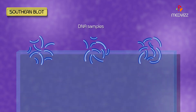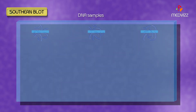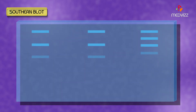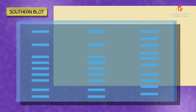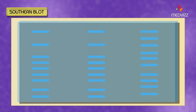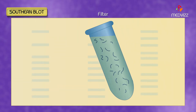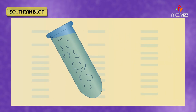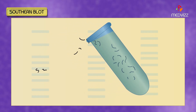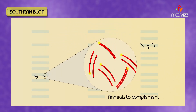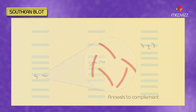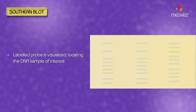DNA samples are separated via electrophoresis on a gel. The separated DNA is transferred to a filter. The DNA is then exposed to a labeled DNA probe that anneals to its complement. The labeled probe is then visualized, locating the DNA sample of interest.